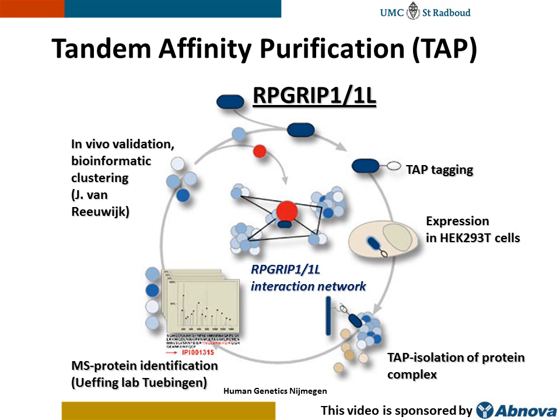We made use of the tandem affinity purification method to dissect the ARPA-GRIP-1 and ARPA-GRIP-1-like protein networks. In this method, your protein of interest is expressed in HEK293 T-cells as a fusion protein to a strep-flag tag. Endogenous proteins present in the cells can then bind to your protein of interest, so native protein complexes are formed. Subsequently, cells are lysed and protein complexes are purified in two tandem steps, making use of the strep and flag moieties of the tag. The isolated proteins are then analyzed via mass spectrometry, and bioinformatic methods are used to cluster the interactors. Further validation of interactions can be performed in pull-down or co-IP experiments, allowing you to build up your interaction network.